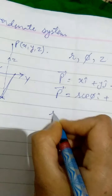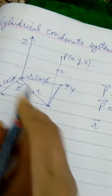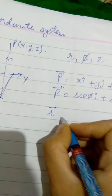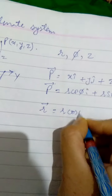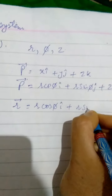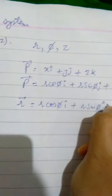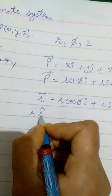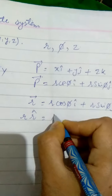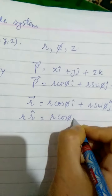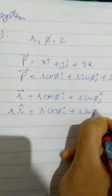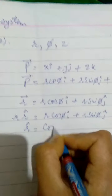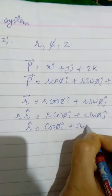Now, what is the r vector? This r vector can be written as x i plus y j, and that is r cos phi i plus r sin phi j. This r can also be written as r r-cap, where r-cap is the unit vector pointing along the direction of r. So, dividing throughout by r, r-cap is cos phi i plus sin phi j.